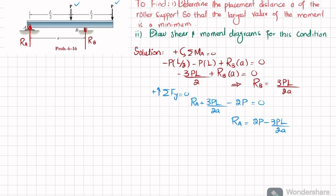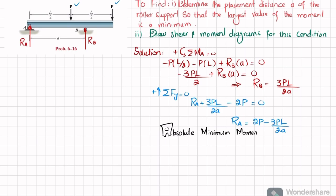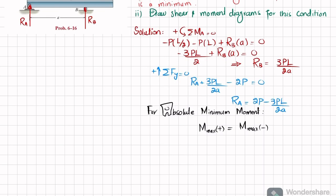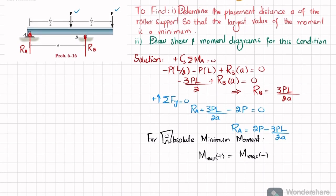Now we will find the absolute minimum moment. The condition for absolute minimum moment is that the maximum positive moment equals the maximum negative moment. At one point we will have a maximum positive moment and at another point a maximum negative moment, and we will equate them.